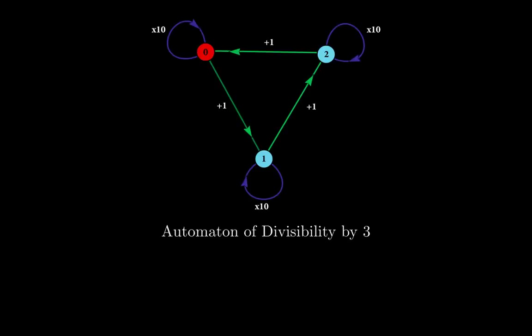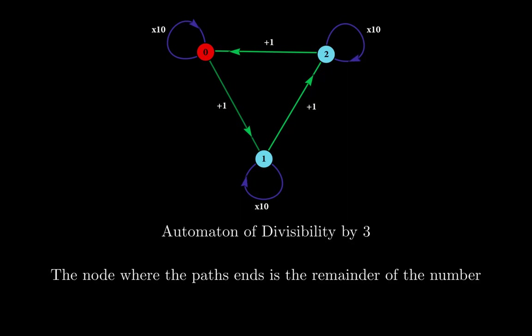There is more to this automaton. The node where the path ends indicates the remainder of the number. When your path ends at 0, the remainder of the number divided by 3 is 0. If it ends at 1 or 2, that tells you the remainder of the number divided by 3. So this basically tells you the remainder of that division.